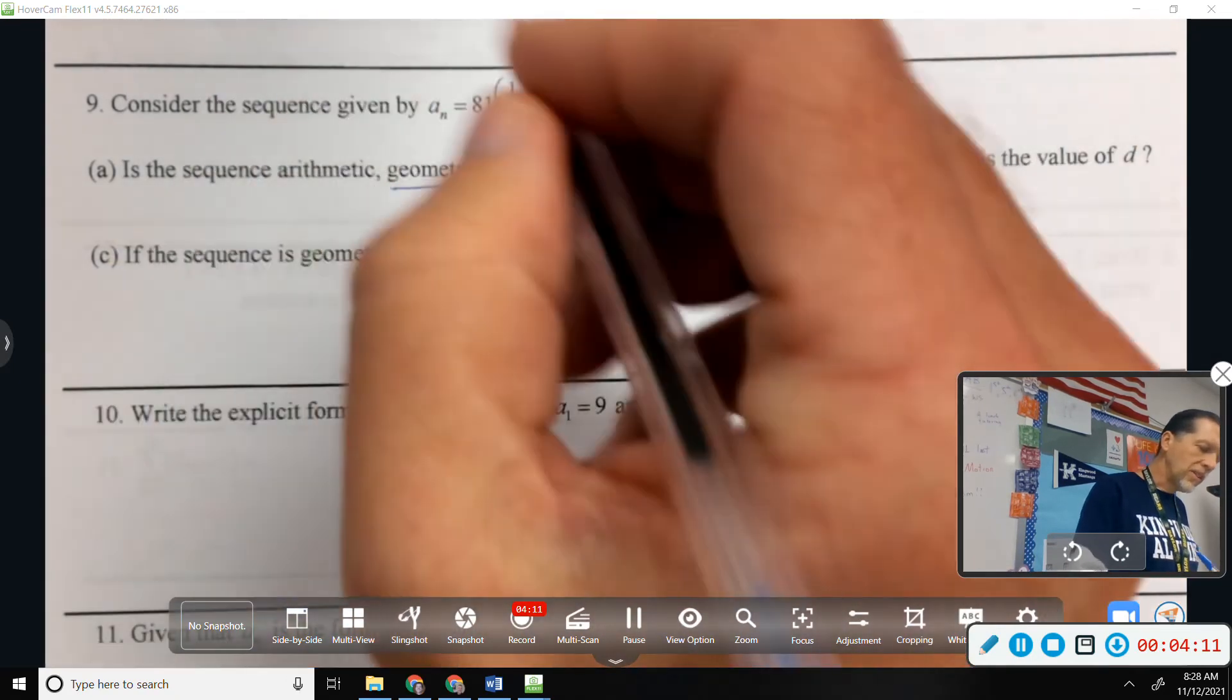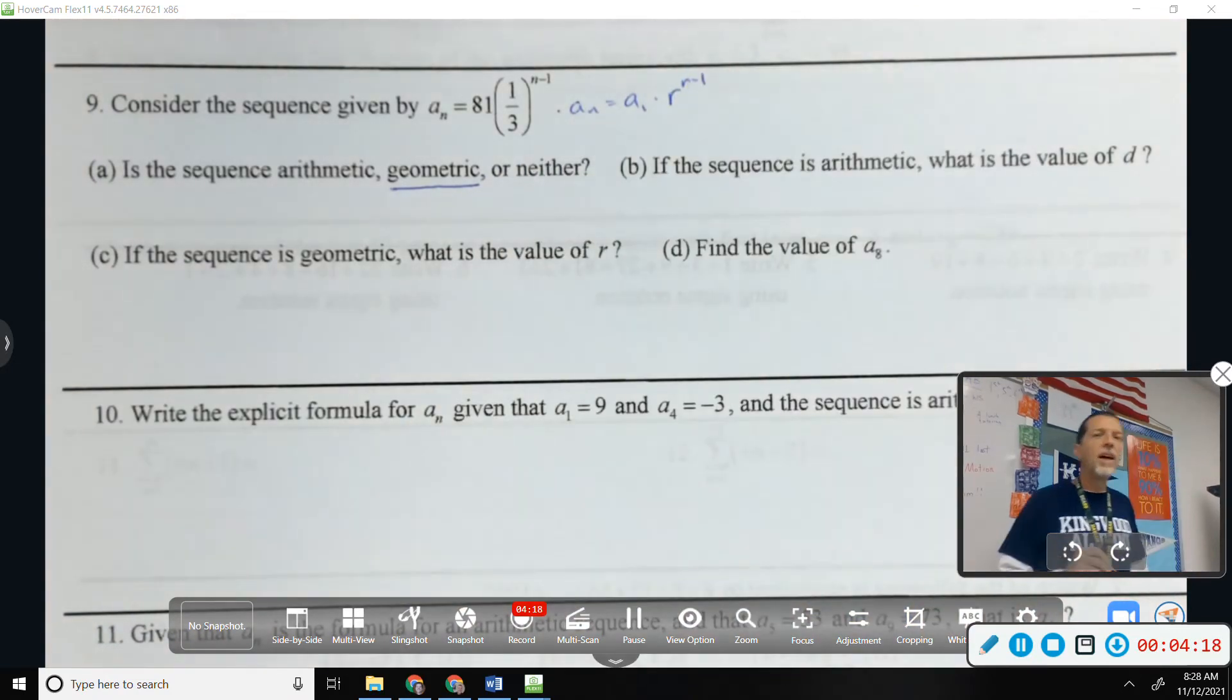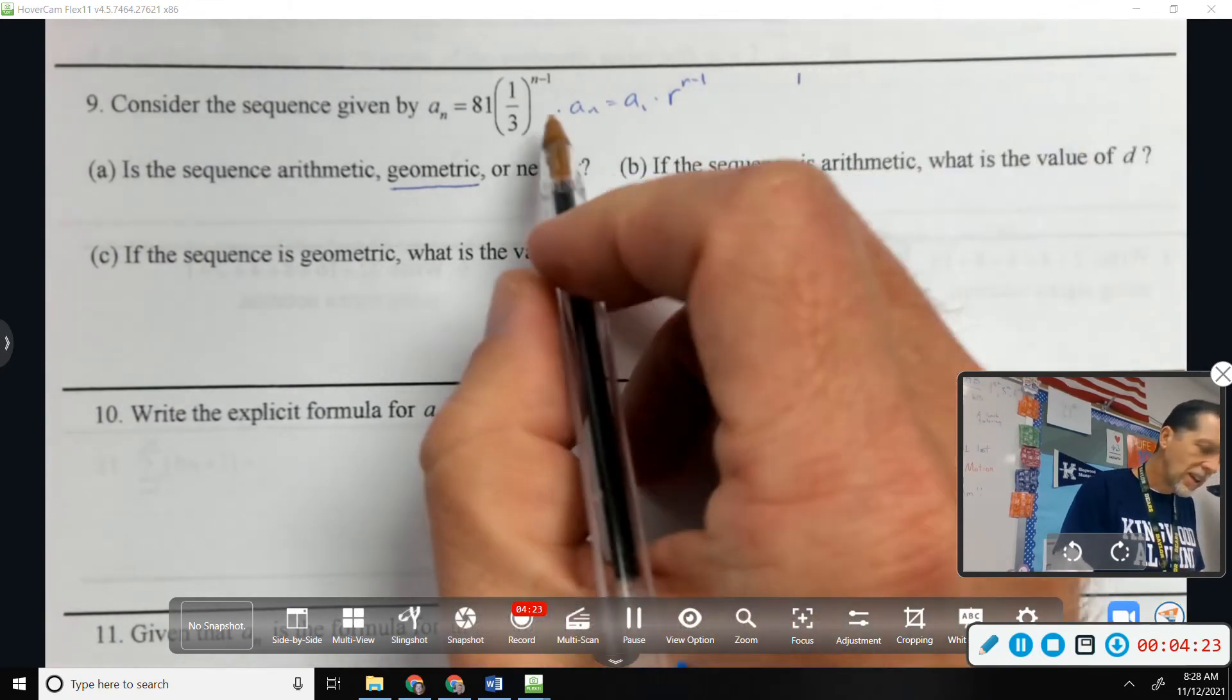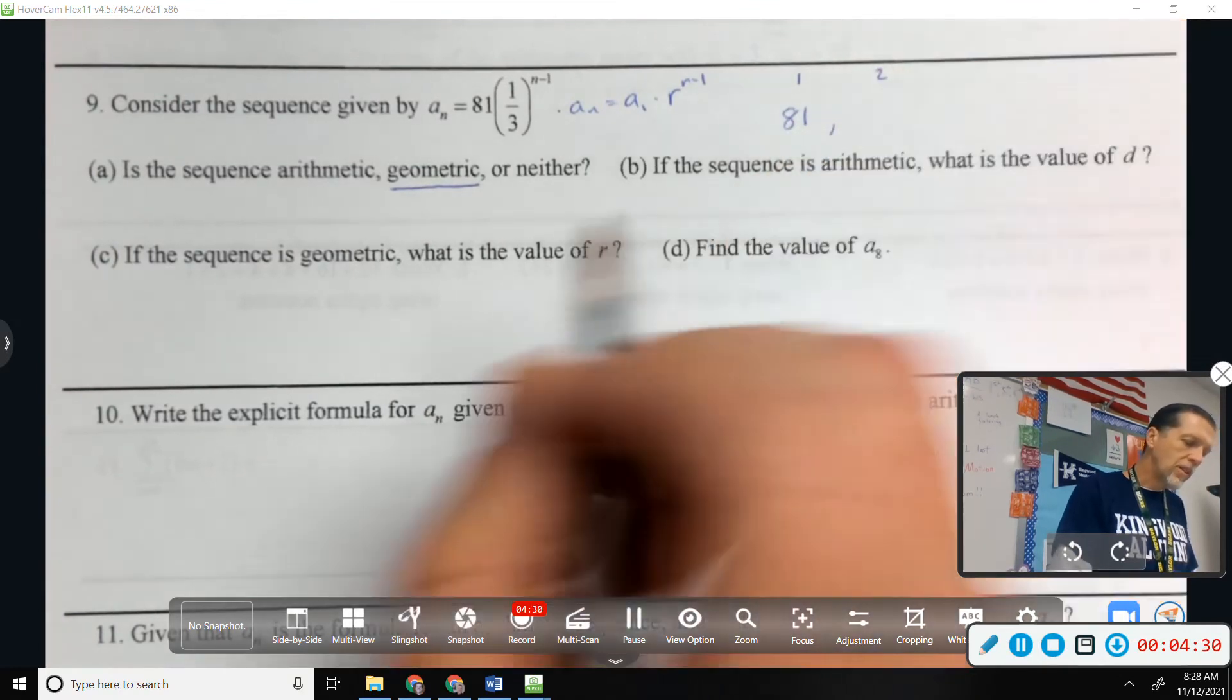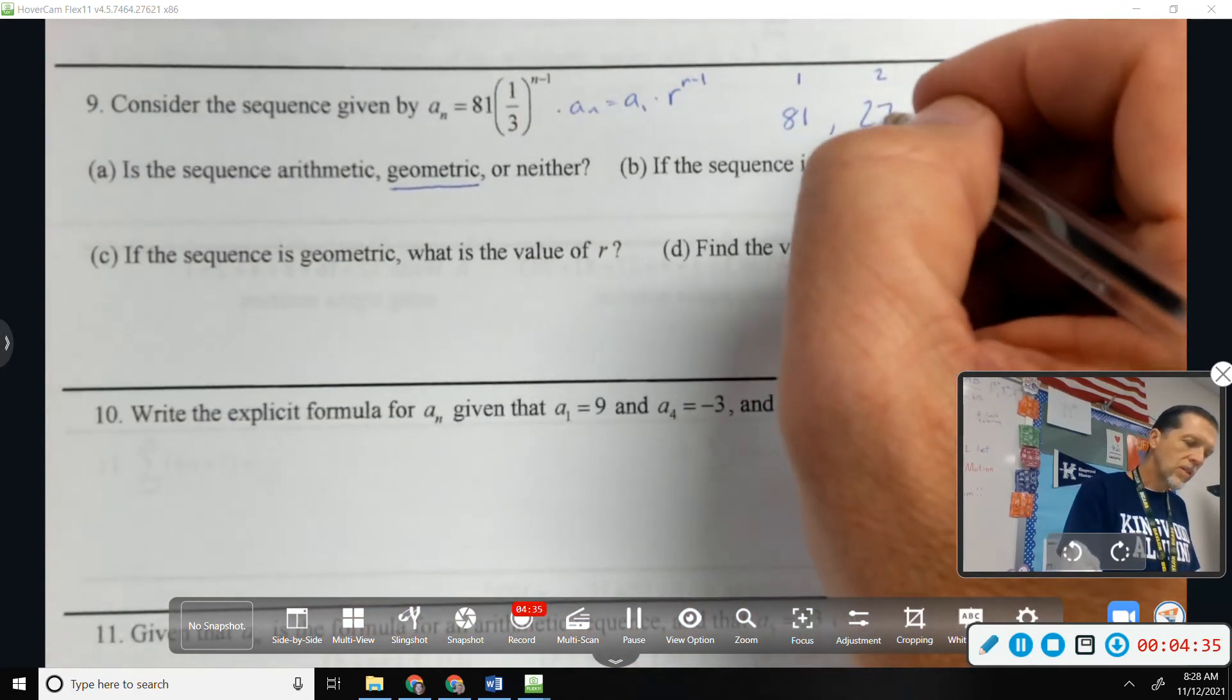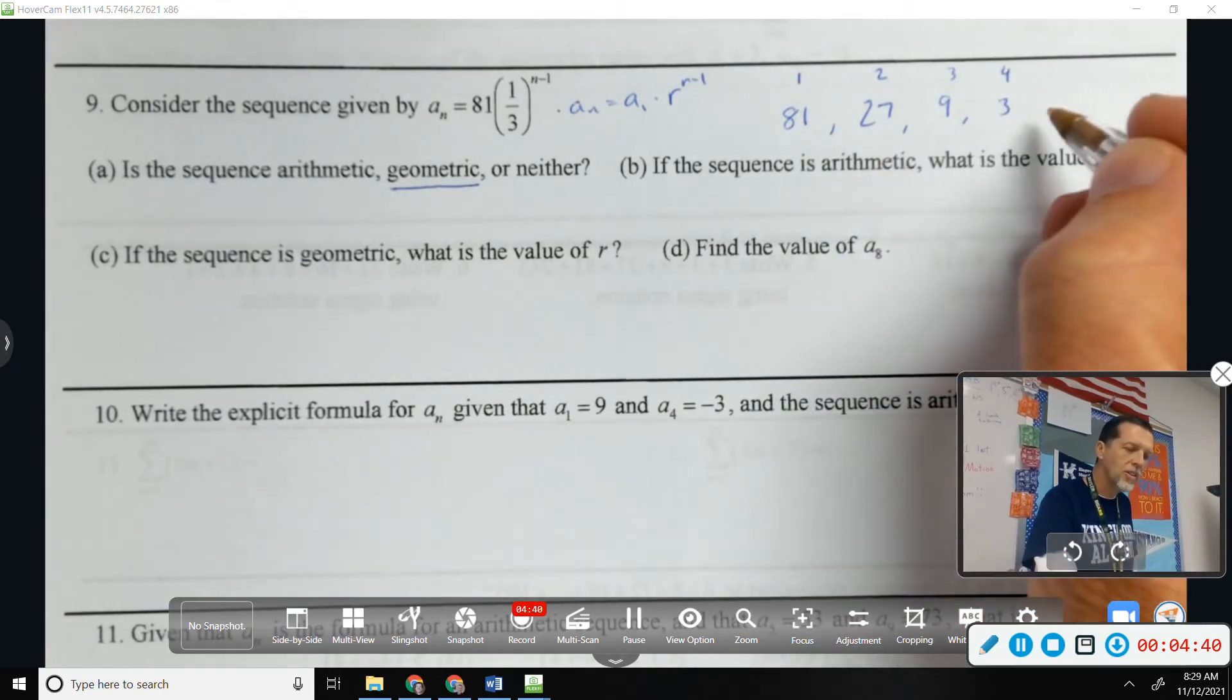I think it's geometric because it looks like a_n equals a_1 times r to the n minus 1. If you don't see that, well then you just, you're going to have to plug in some values. So if you plug in 1, one third to the 0 is 1. That'd be 81. If we plug in 2, that's 81 times a third is 27.